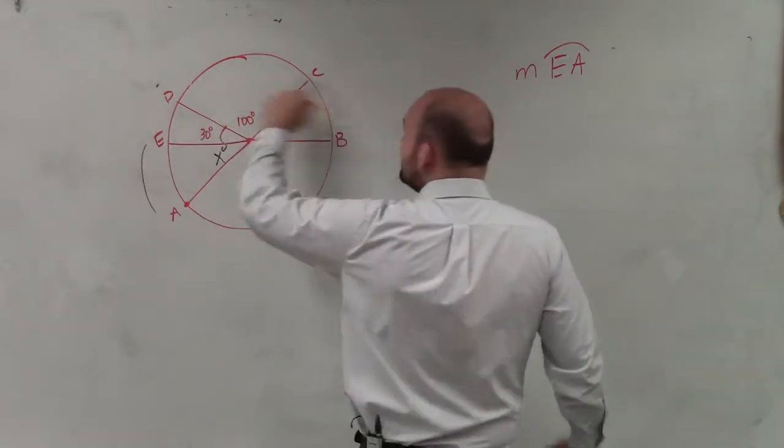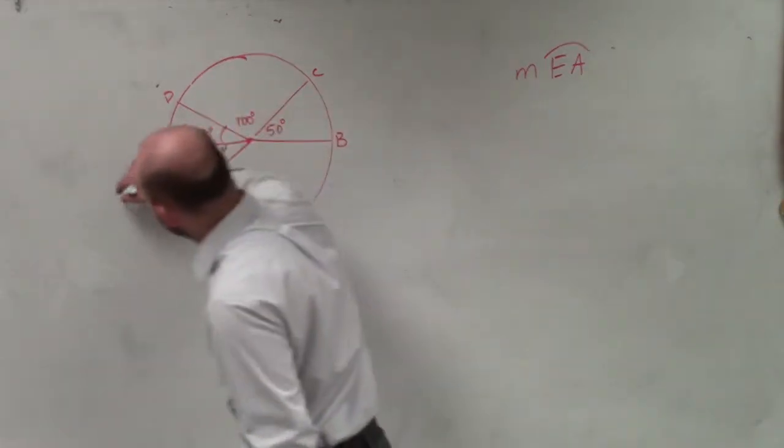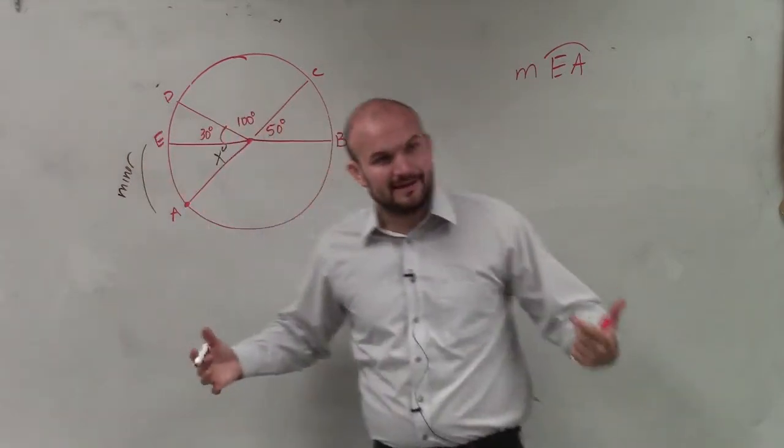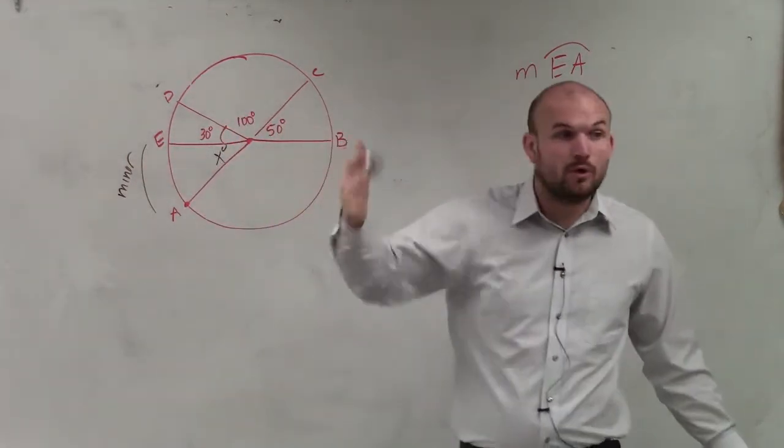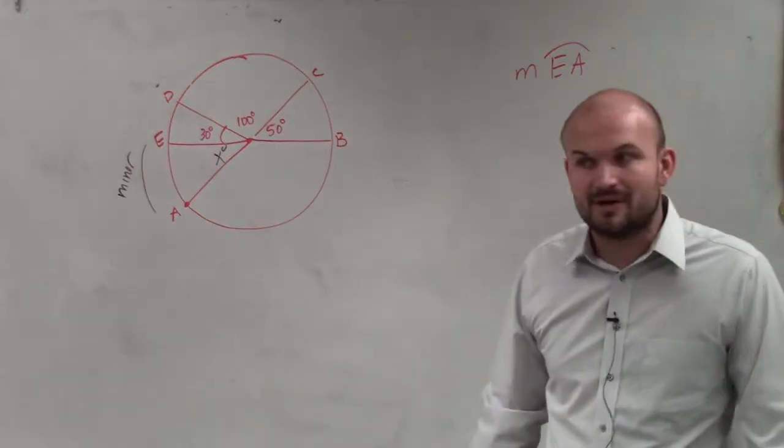For DC, they gave us that central angle. We know that this is a minor arc, right? It's less than 180. It's a minor arc, so it's equal to the central angle. The problem is we don't know what the central angle is. They didn't provide it to us.